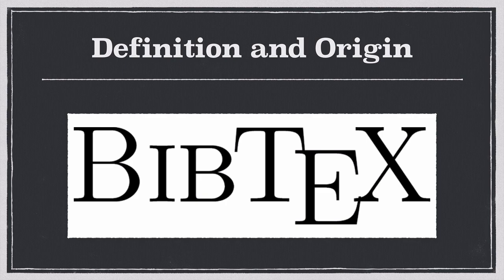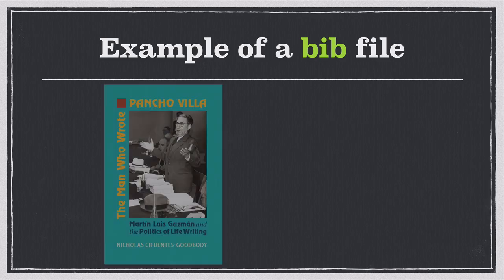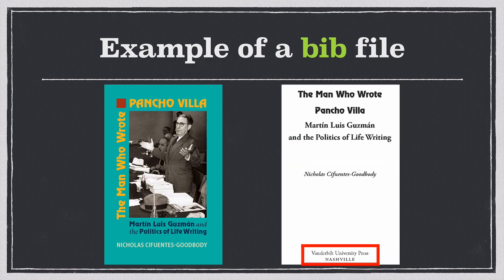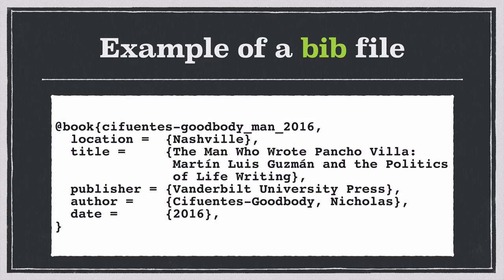Maybe this would all be easier with a more concrete example. So here we have the cover of a book — and I have to say, this is an excellent book; I urge you to go out and buy 500 or 600 copies. If I go to the title page of this book, you can see there's a lot of metadata associated with the source: the title and subtitle, the name of the author, the publishing house, and the place of publication. If I were to take all that information and put it in a bib file, it would look like this.